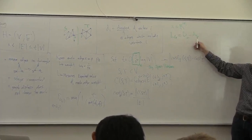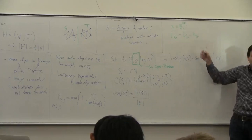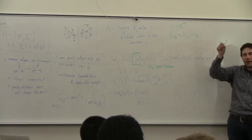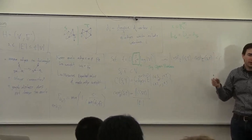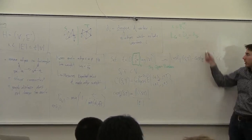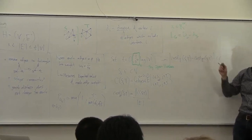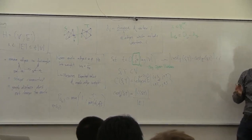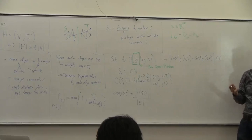The Laplacian of a graph consists of the degree matrix — which is diagonal, with the degree of every vertex at the i-th spot on the diagonal — minus the adjacency matrix, which has a one in element (i,j) if there's an edge between i and j. The Laplacian really characterizes a lot of properties of the graph.